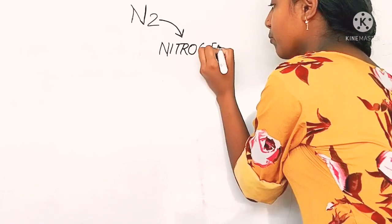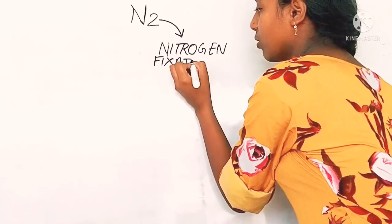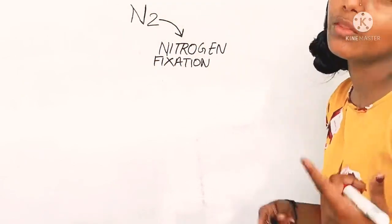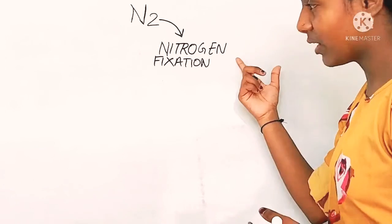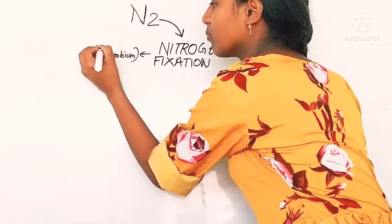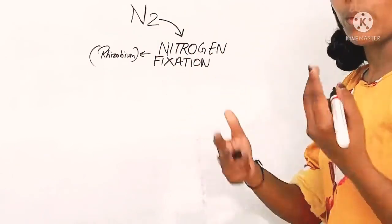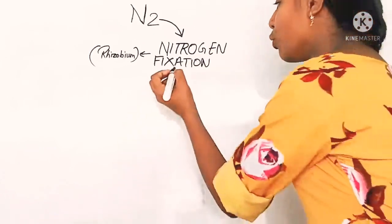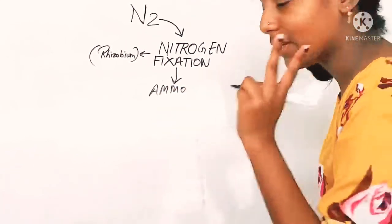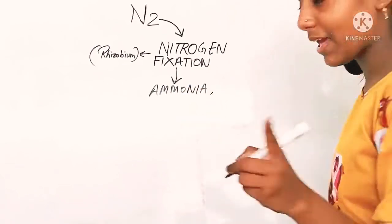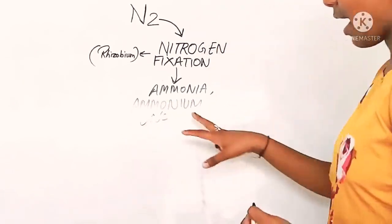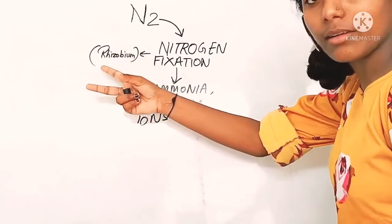Write in your notebook: nitrogen fixation is the first term or factor in the cycle. Nitrogen fixation is carried out by rhizobia bacteria. Rhizobia bacteria, through the process of nitrogen fixation, will change N2 into two major products — ammonia and ammonium ions.